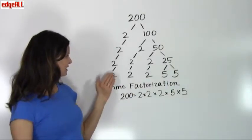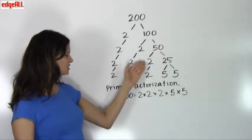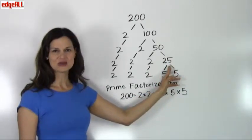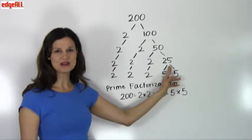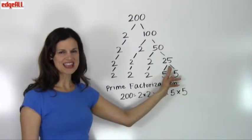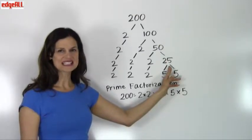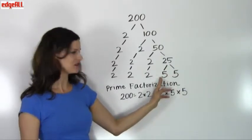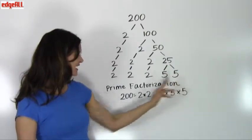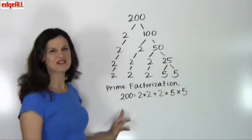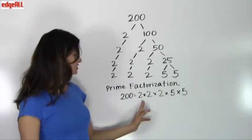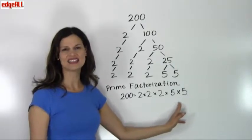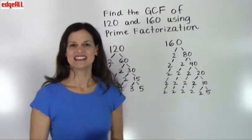We keep our next level with primes of 2, 2, and 2, and we factor out 25. Since 25 is not divisible by 2 or by 3, we move to our next prime number, 5, and find that 25 is divisible by 5 — it equals 5 times 5. So the prime factorization of 200 equals 2 times 2 times 2 times 5 times 5.